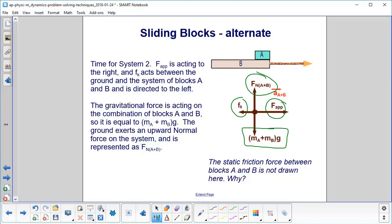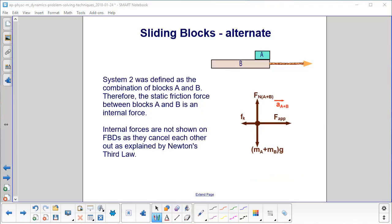The static friction force between blocks A and B is not drawn here. Why? System 2 is defined as the combination of blocks A and B. Therefore, the static friction force between blocks A and B is an internal force. Internal forces are not shown on free body diagrams as they cancel each other out as explained by Newton's Third Law. You have one force going this way, the other one is equal and opposite, so their sum is zero and they will not contribute to the motion of the entire system.